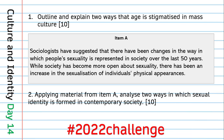That finishes Day 13. Moving to Day 14, the penultimate day on cultural identity, the first question is: outline and explain two ways that age is stigmatised in mass culture. This covers stigmatisation of young people — particularly teenagers — and negative stigmatisation of old age. The second question asks you to apply material from Item A to analyse two ways sexual identity is formed in contemporary society, which can cover heterosexual identity, sexuality broadly, and the LGBTQ community.